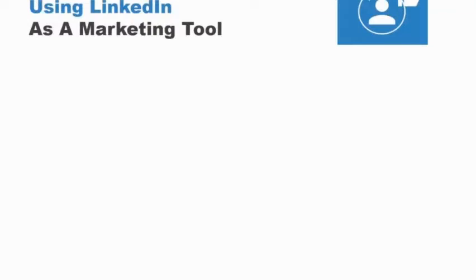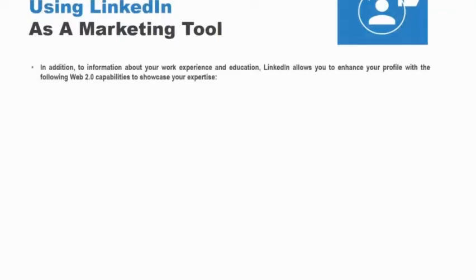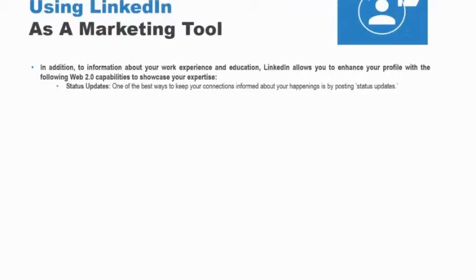Using LinkedIn as a marketing tool. Think of your LinkedIn profile as an interactive resume on steroids. In addition to information about your work experience and education, LinkedIn allows you to enhance your profile with Web 2.0 capabilities to showcase your expertise. One of the best ways to keep your connections informed about your happenings is by posting status updates — brief statements that you feel your connections will find useful. They can include links to related content on your website or third-party websites. To appear active in the LinkedIn community, post useful and actionable status updates on a regular basis.